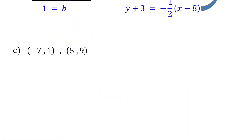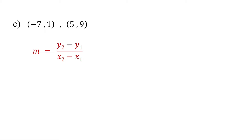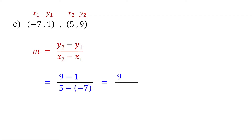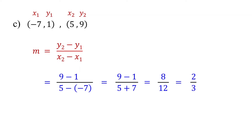Sometimes you might need to write the equation in standard form. In that case, it's easier to start with point-slope form and then convert to standard form. First, find the slope by labeling the points and substituting the values into the formula. Simplifying — remember, subtracting a negative is the same as adding — 9 minus 1 is 8 and 5 plus 7 is 12. Dividing both numbers by 4 simplifies to 2 over 3, so the slope is two thirds.